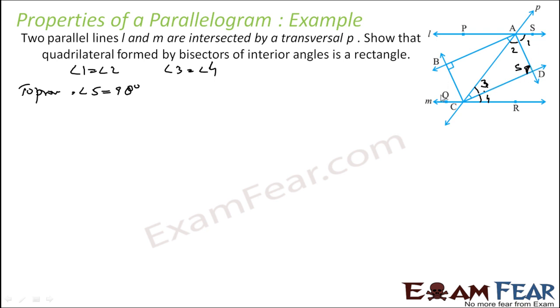And I also have to prove that it is a parallelogram — that AB is parallel to CD and BQ is parallel to AD. So let us first prove that the angle is 90 degrees.